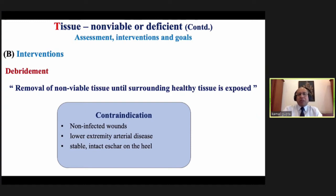Coming to interventions — the most important intervention remains debridement. Debridement is removal of non-viable tissue until surrounding healthy tissue is exposed. There are contraindications: if the wound is non-infected, there is no point in debridement. If there is peripheral arterial disease and you cannot palpate the posterior tibial artery or dorsalis pedis, that is a contraindication. If the eschar is stable — especially on the heel — please do not go for debridement.